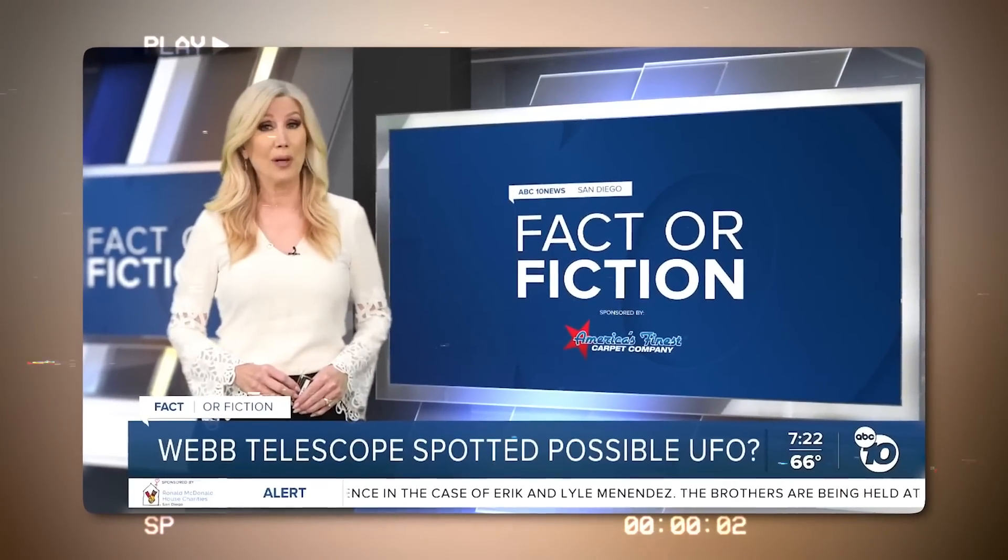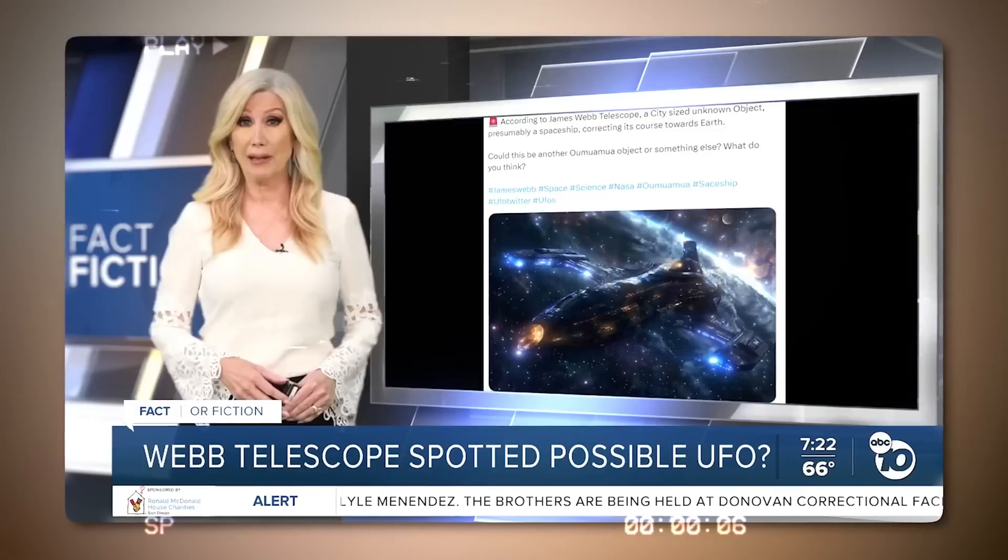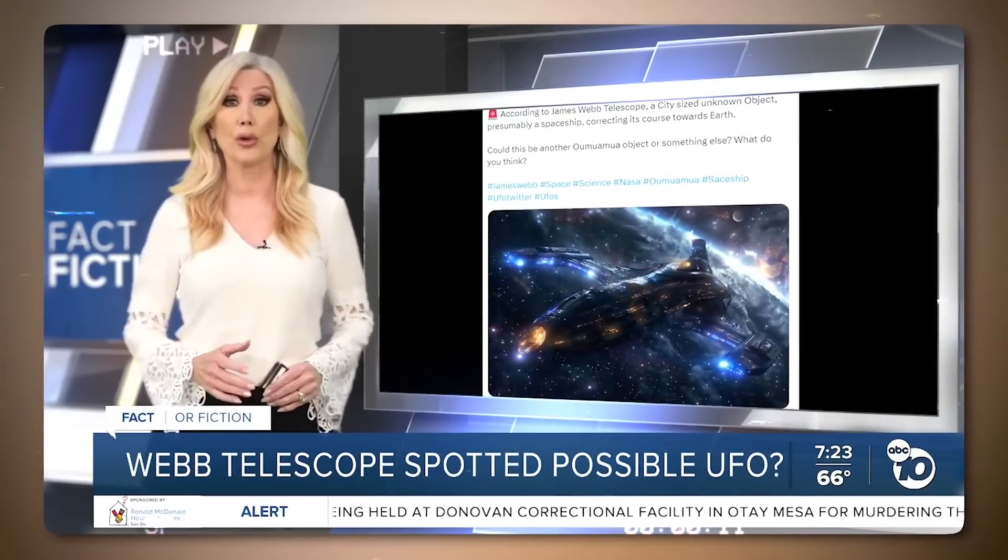Tonight we're looking into posts being spread on social media. They claim the James Webb Space Telescope spotted a large object about 10 light years away moving toward Earth.